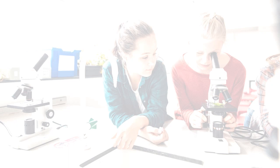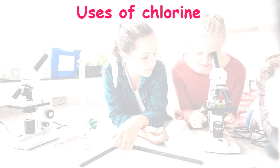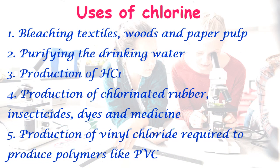Chlorine is one of the by-products of the membrane process. Chlorine can be used for bleaching purposes such as bleaching textiles, wood, and paper. It is also used for purifying drinking water — in Sri Lanka, drinking water is purified using chlorine. Furthermore, chlorine is used for production of hydrochloric acid, chlorinated rubber, insecticides, dyes, medicines, and vinyl chloride required to produce polymers like polyvinyl chloride (PVC).